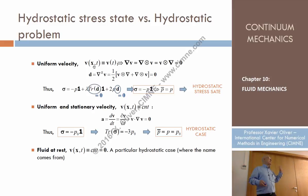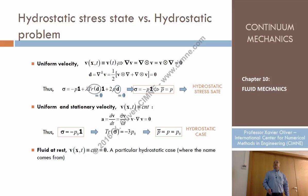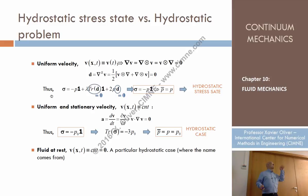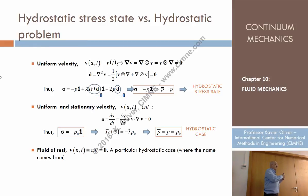Hydrostatics requires an additional assumption: the velocity doesn't depend on space, but also doesn't depend on time — so the velocity is constant. In the uniform velocity case, the convective derivative was zero, but the local derivative was not zero, so accelerations are not zero. Hydrostatics is when the velocity is constant, not necessarily zero.